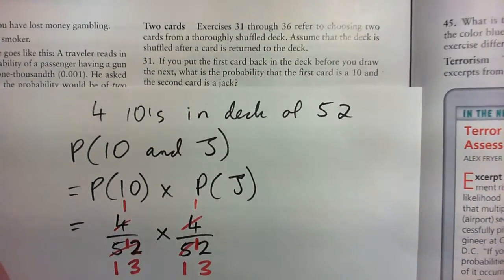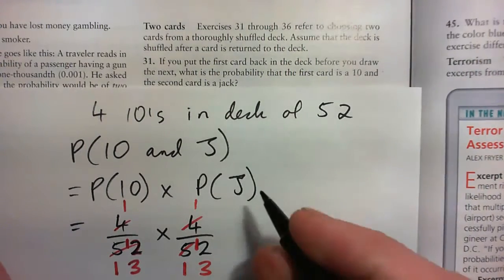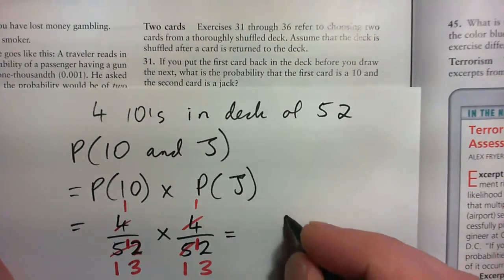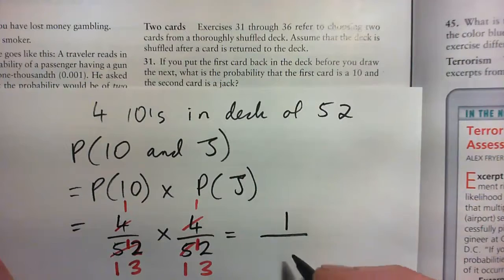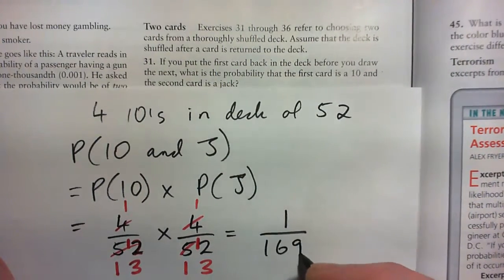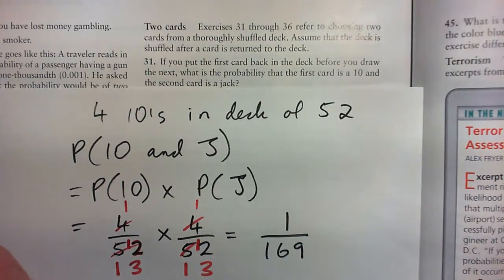4 into 12 goes 3 times. So we have 1 over 13 times 1 over 13, which is 1 times 1 is 1, 13 times itself is 169. So that's the probability of getting a 10 and then a jack.